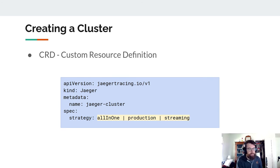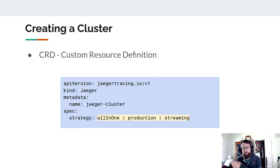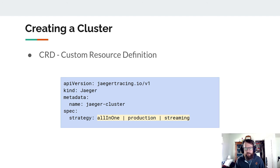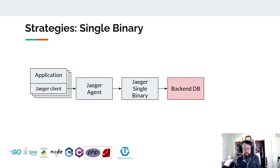We make a simple object like you would make a deployment, and then the operator goes and makes the actual pods and all of the infrastructure necessary. There's a strategy option as a first choice when making a cluster — by default it uses all-in-one, which is a great place to start. All-in-one is a single binary deployment. We can also choose production or streaming. If you're getting started, use all-in-one, get a feel for it, deploy a test application, see all the traces in your backend.